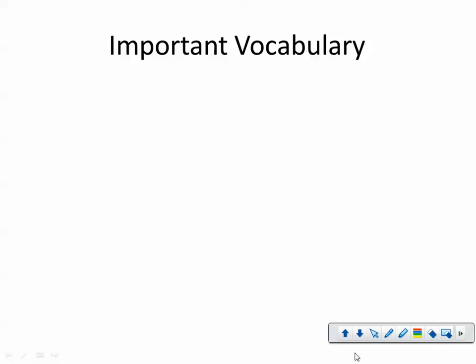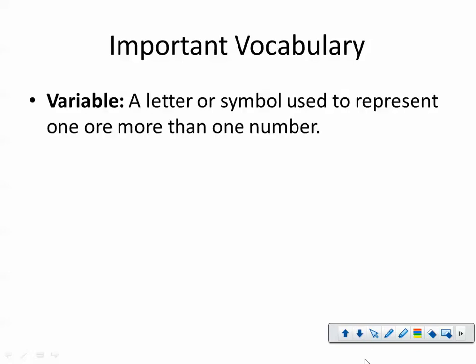Some important vocabulary. You're going to open up your vocabulary document that you have on your Google Drive, and I want you to add this vocabulary to it. The first is variable. A variable is a letter or symbol. So it can be anything. Typically we use X, but we can use any symbol. Remember, we can use happy face if we want to. That's used to represent one or, which is misspelled, more than one number. So it's just a representation. It's a stand-in.